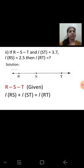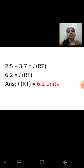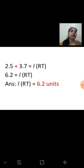Next: if R–S–T, meaning point S lies between R and T, length ST = 3.7 and length RS = 2.5, find length RT. Draw the number line showing R, S, T. Since RS + ST = RT, substitute the values: 2.5 + 3.7 = RT, so RT = 6.2 units.